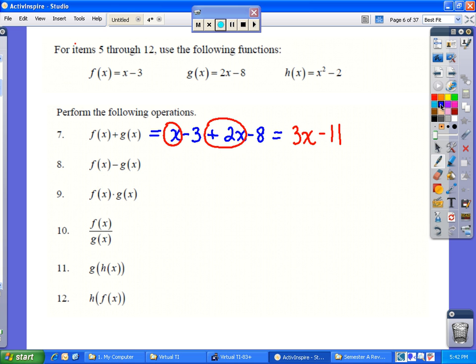Number 8, f of x minus g of x requires us, x minus 3, to use parentheses to show that we are subtracting the whole g of x function, 2x minus 8. I'd like to use keep, change, change, although this is not necessary. It might make it easier. Keep, change the sign from subtraction to addition, and change the sign of each term after that.